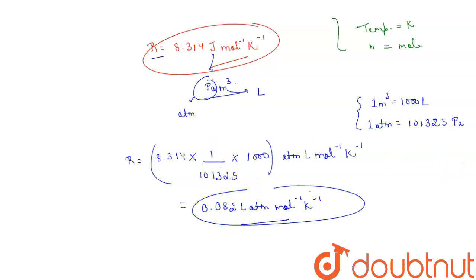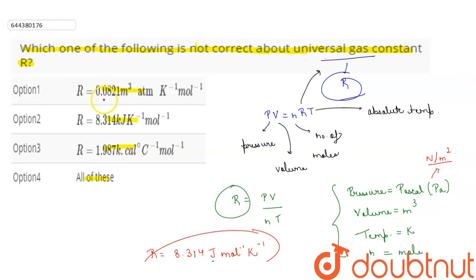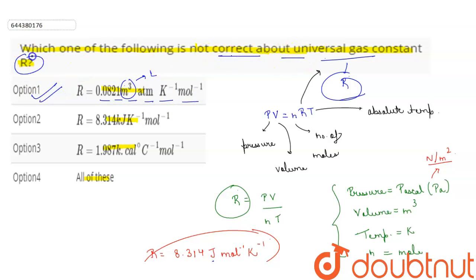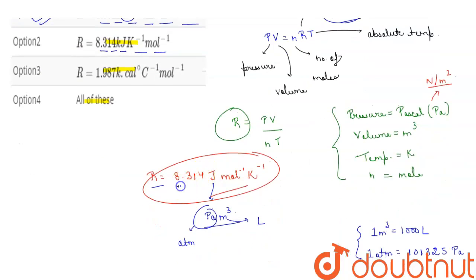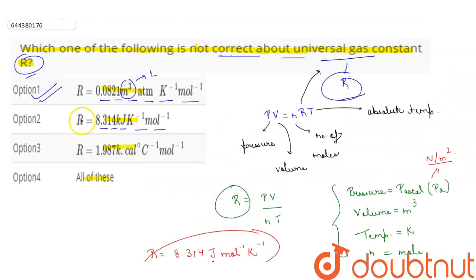Now let's check the options. Option 1 gives 0.0821 meter cube atmosphere kelvin inverse mole inverse — but it should be liter, not meter cube, so this option is incorrect. Option 2 gives 8.314 kilojoule kelvin inverse mole inverse — but the correct value is 8.314 joule, not kilojoules. So option 2 is also incorrect.